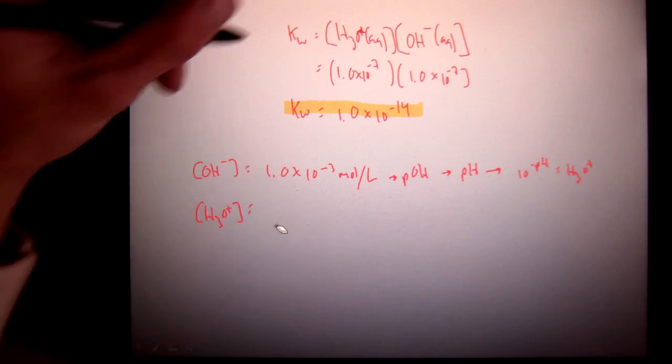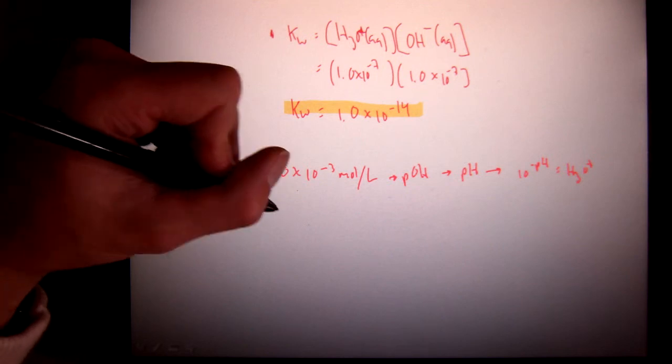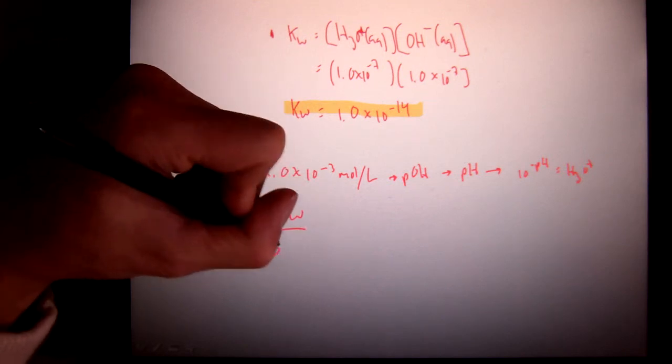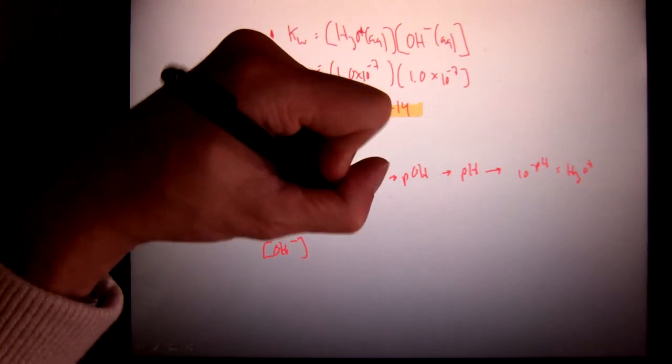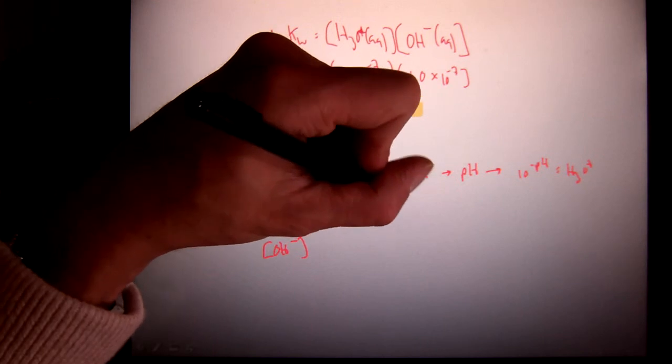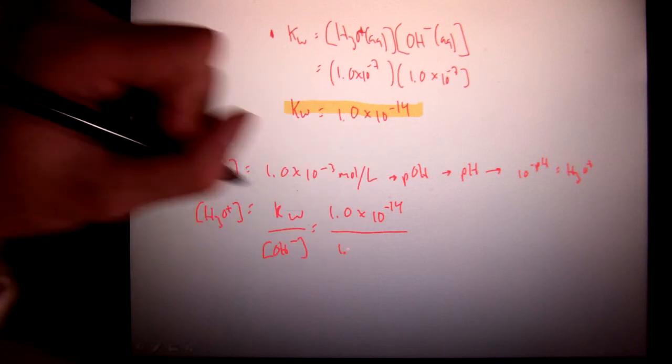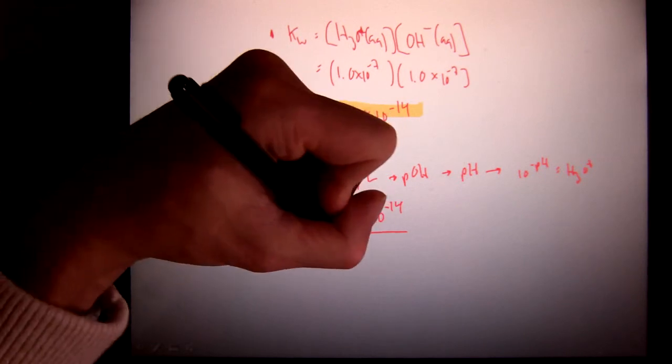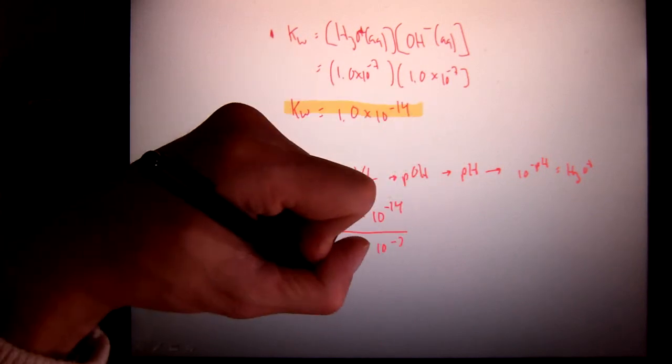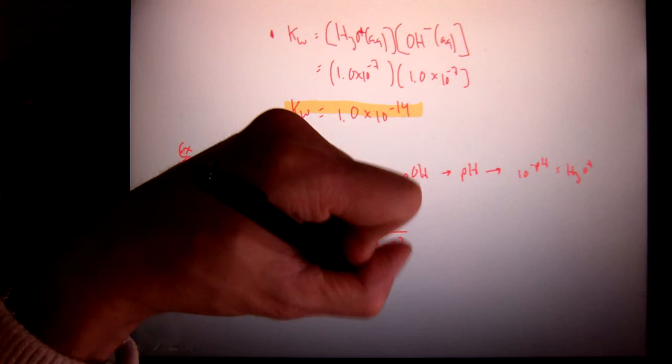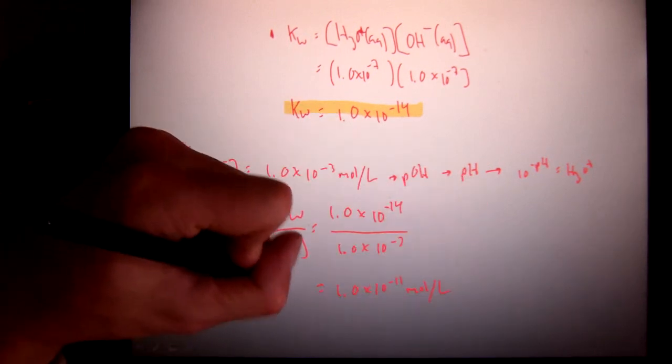This Kw expression allows you to do it in one step. If I was to rearrange my Kw formula to solve for hydronium, it would simply be Kw over OH-. Filling in my numbers, 1.0 times 10 to the negative 14 is what Kw always equals, divided by my hydroxide, which in my example is 1.0 times 10 to the negative 3 moles per liter. That would equate to 1.0 times 10 to the negative 11 moles per liter. Done.